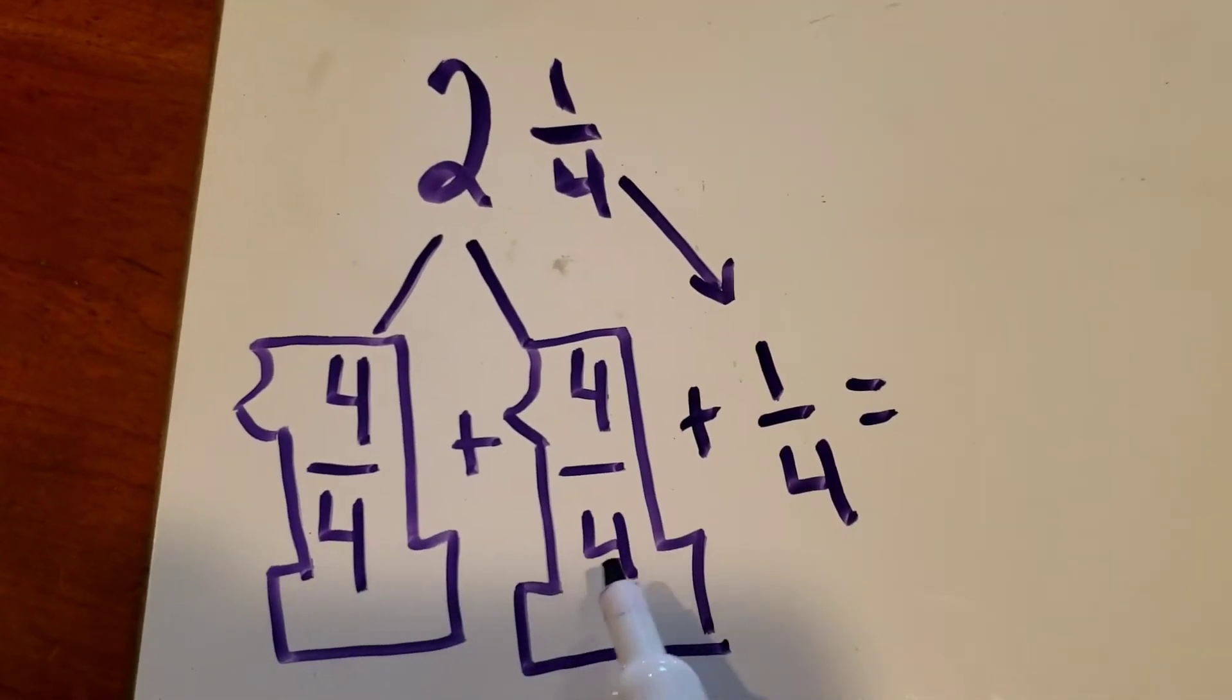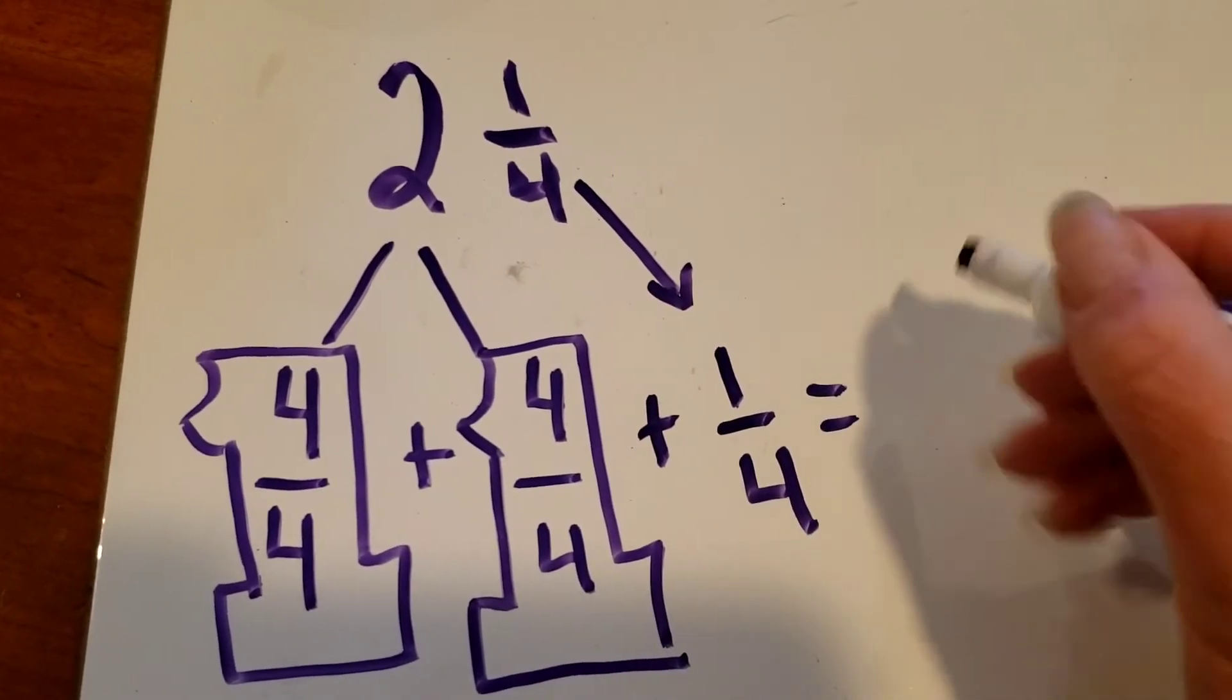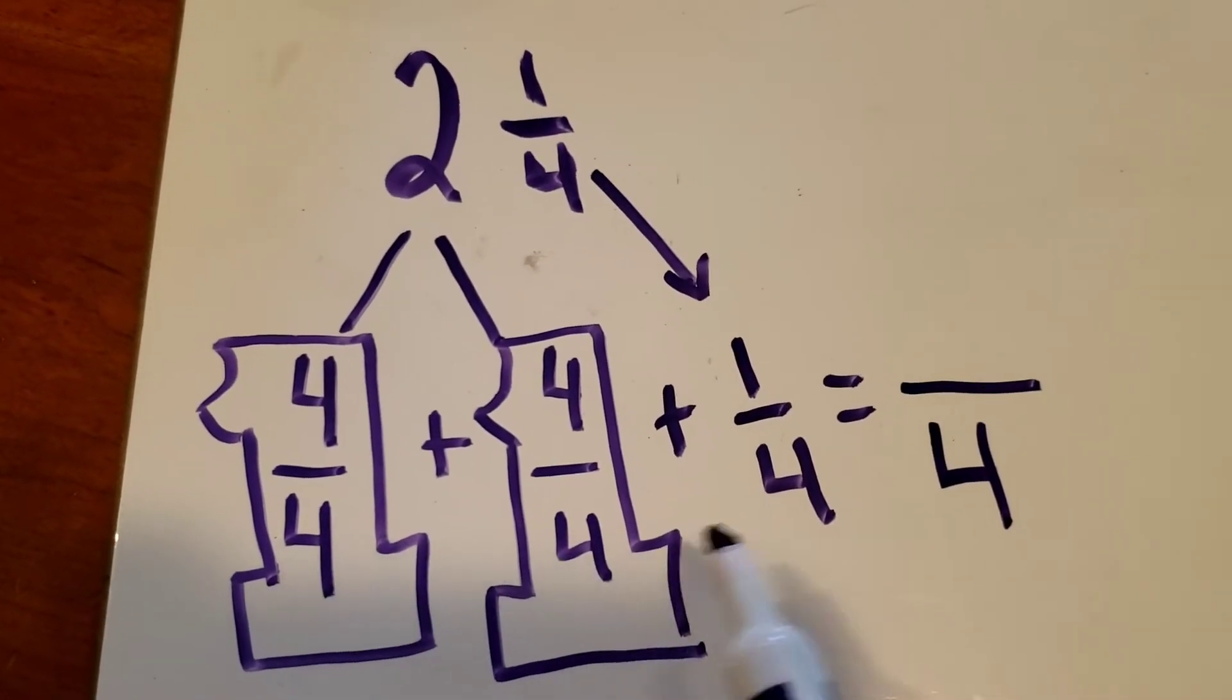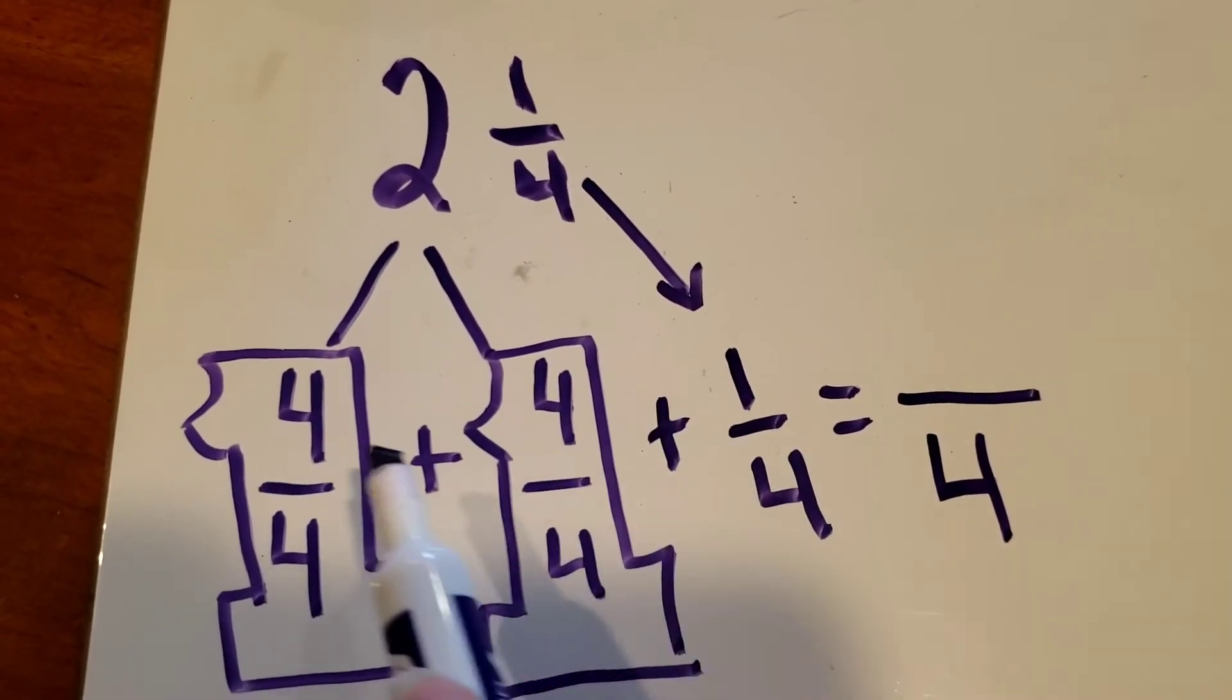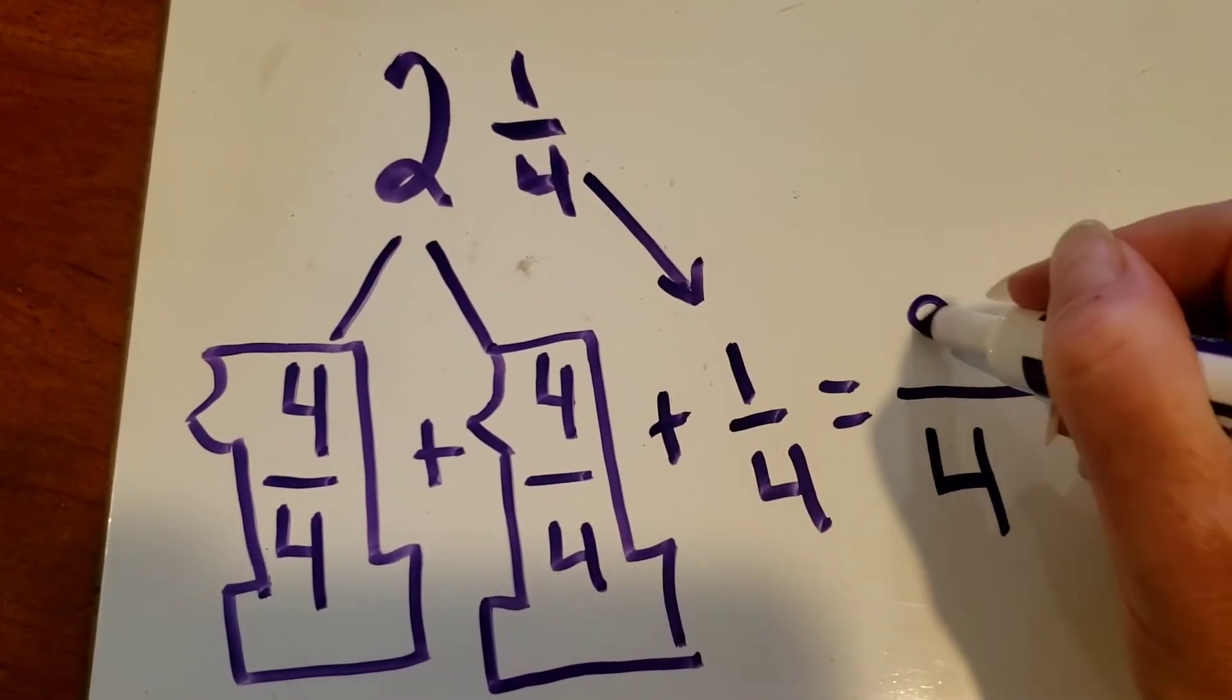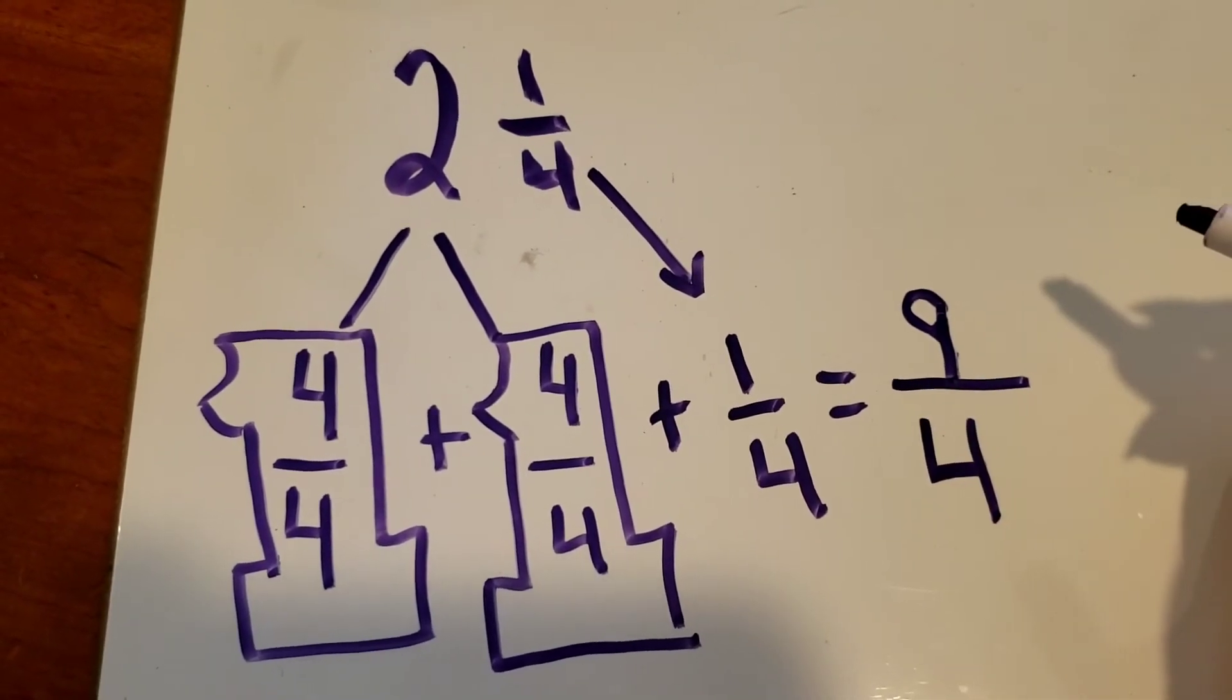Now remember, when we have like denominators, otherwise known as common denominators, we bring it right over because whatever we're working with is still broken up into four equal parts. Then we add our numerators: four plus four plus one more is nine, so we have nine fourths.